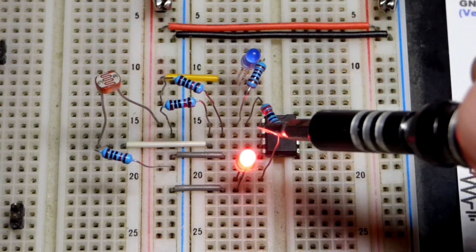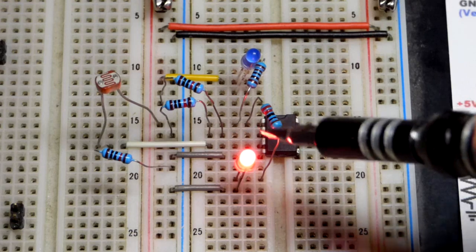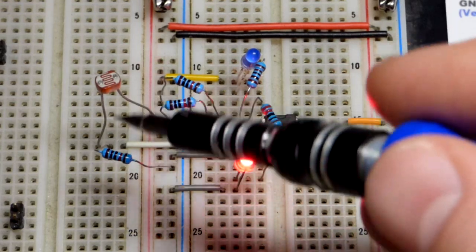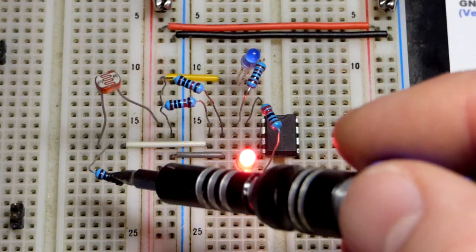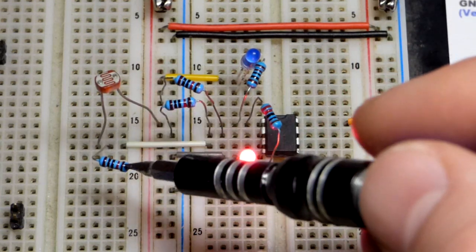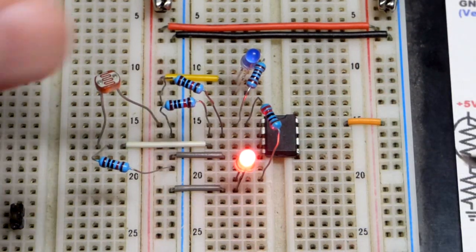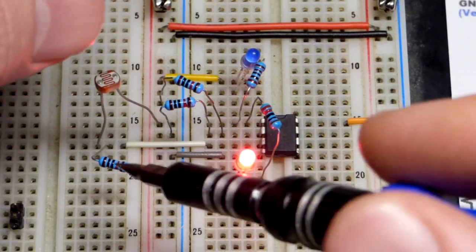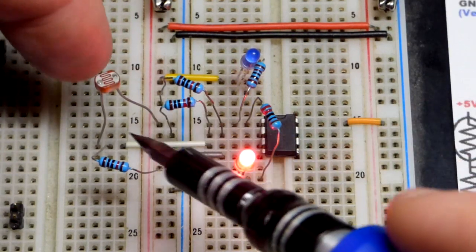Our signal here is the voltage divider with the light-dependent resistor and the 10k resistor. One thing to note: since that's a 10k resistor, that means right now this has less resistance than 10,000 ohms.